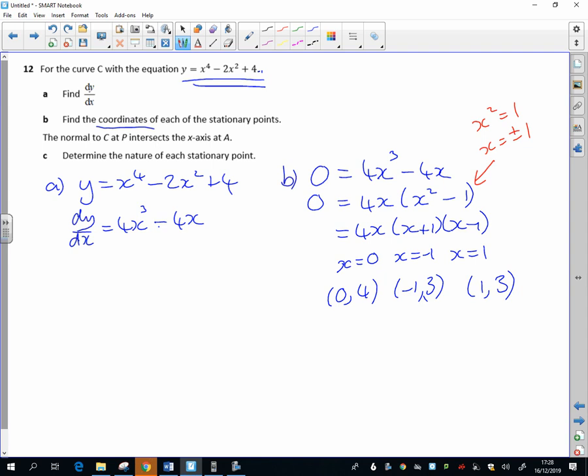It wants me to determine the nature of each stationary point. I don't think that should be there, let's get rid of that. Right, okay. So it wants me to determine the nature of each stationary point. That's going to be the second differential, so that's just differentiating again: 12x squared minus 4.